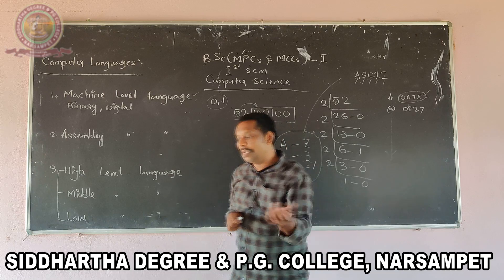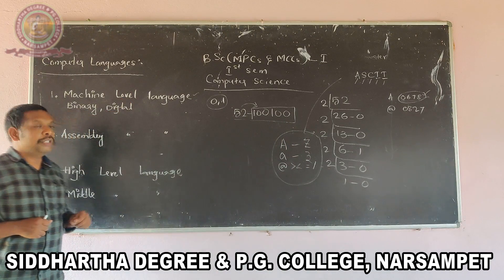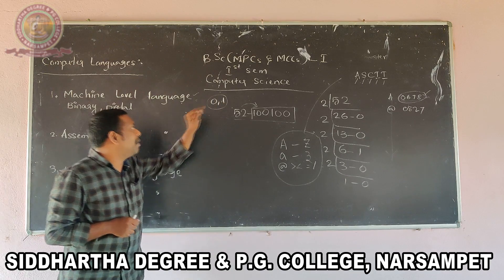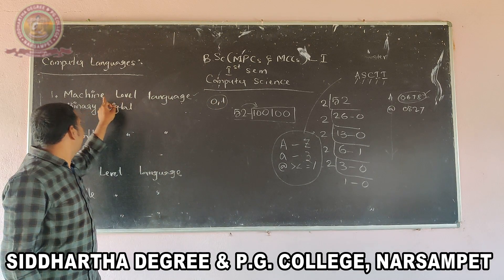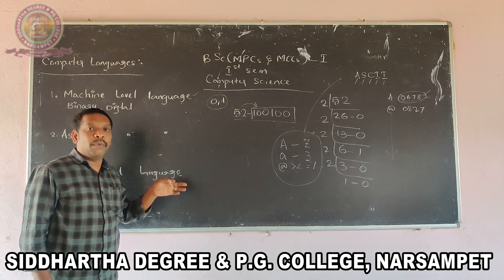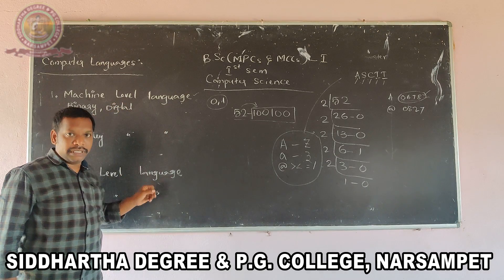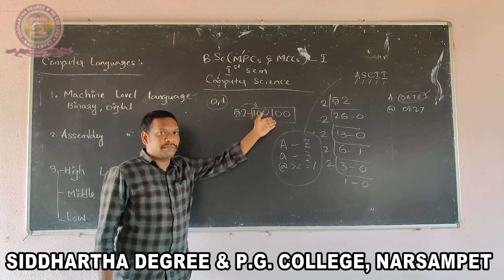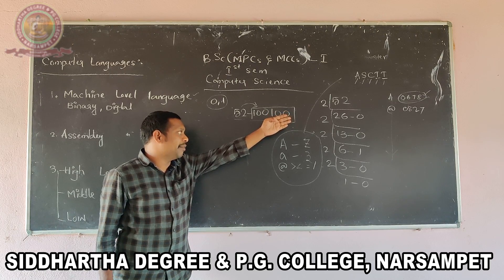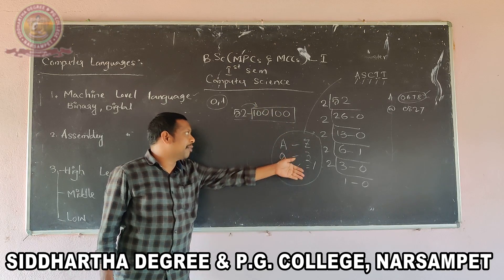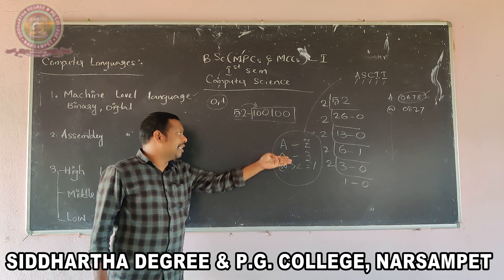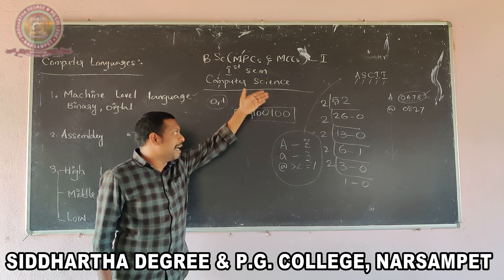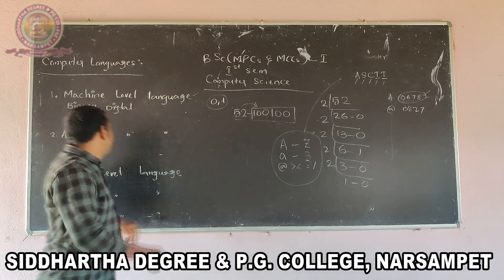To summarize machine level language: the computer can understand only one language, called machine level language, also called binary language and digital language. Binary means 0 and 1. Any natural number is converted into binary, and any character is assigned an ASCII code number which is then converted into binary. This is machine level language.